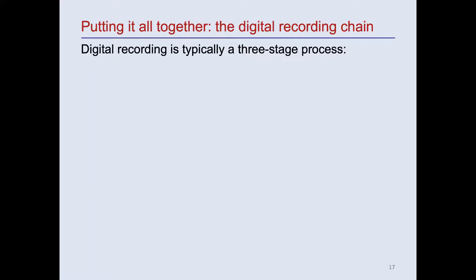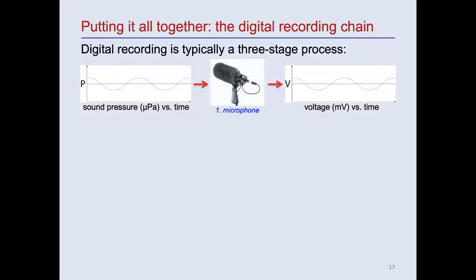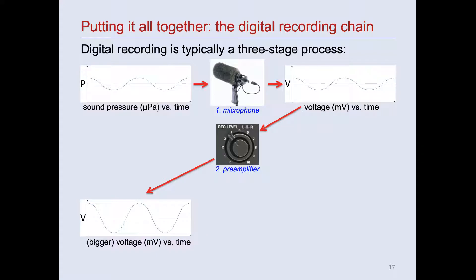Let's take a look now at how this is all put together in a real recording system. Digital audio recording is typically conceived as a three-stage process. In the first stage, a microphone, or in water a hydrophone, converts or transduces time-varying sound pressure into a continuous electrical analog waveform whose voltage is proportional to the sound pressure. The voltage output of a microphone is typically quite small. So, in the second stage, the electrical signal output by the microphone or hydrophone is amplified by a preamplifier.